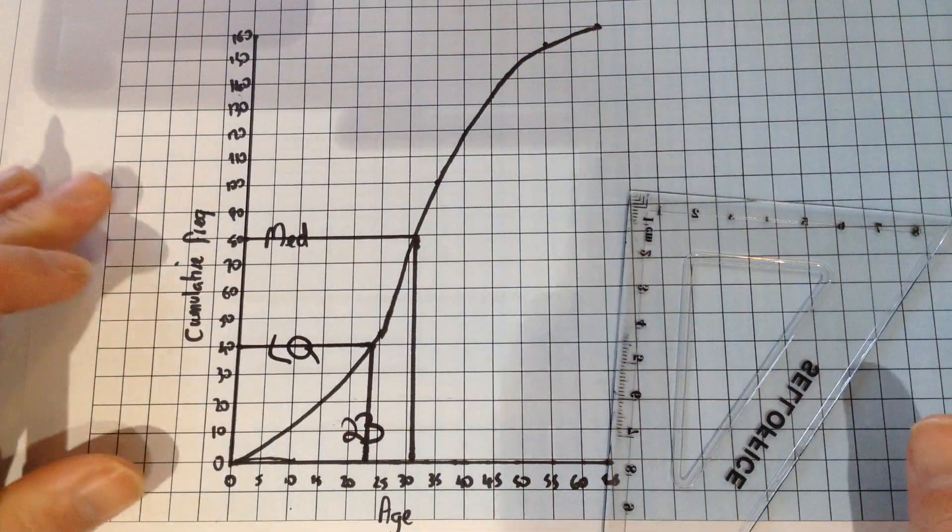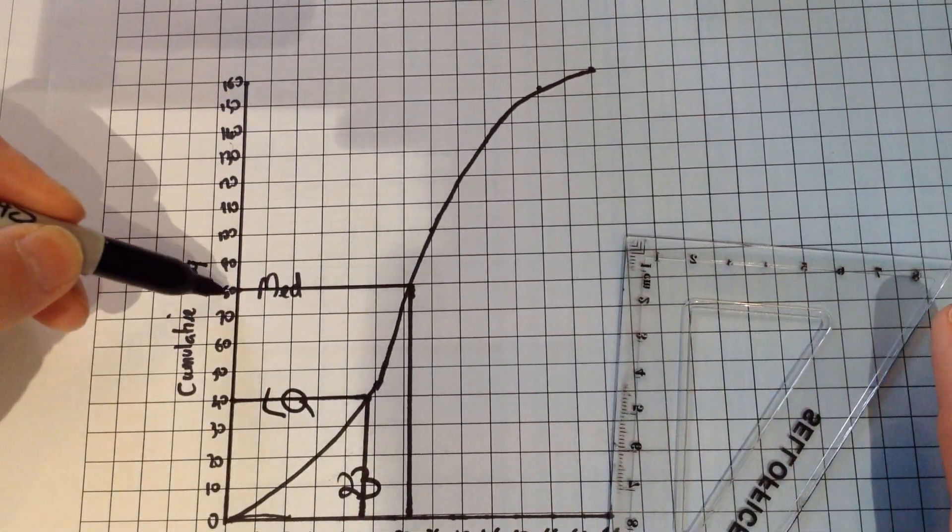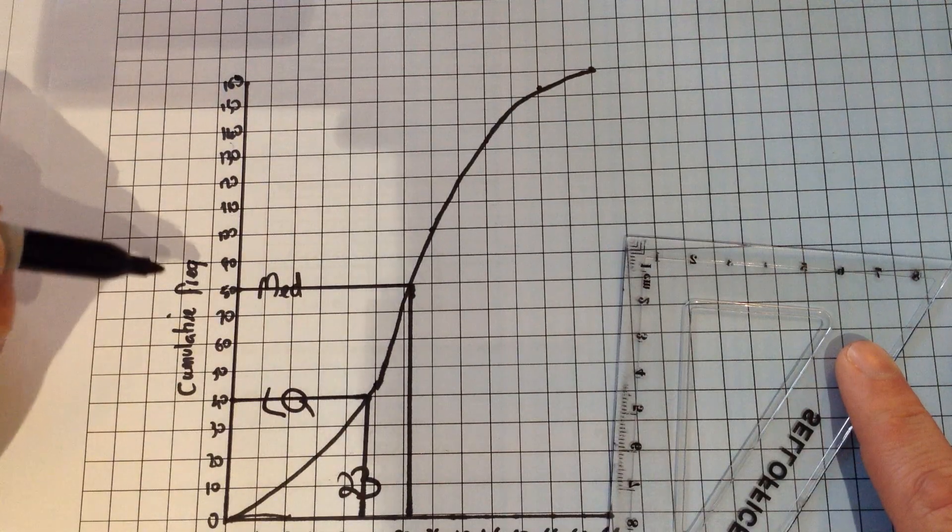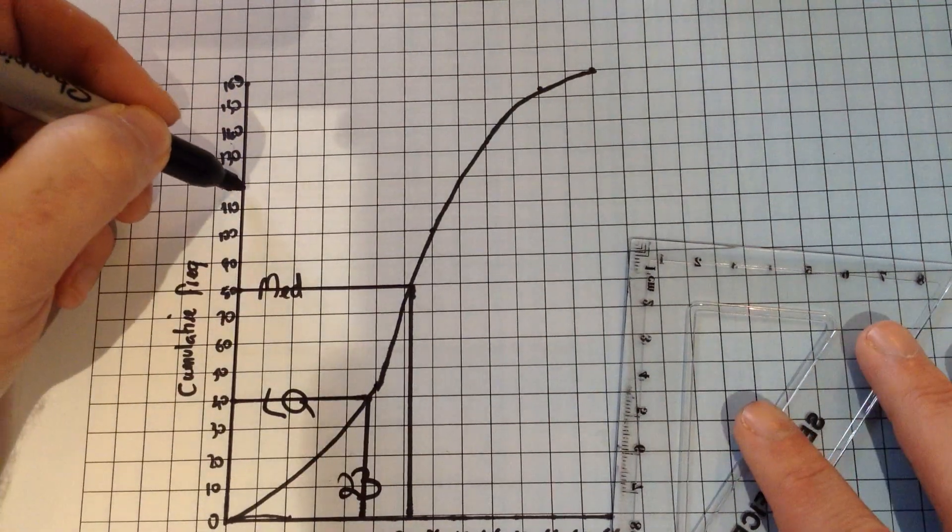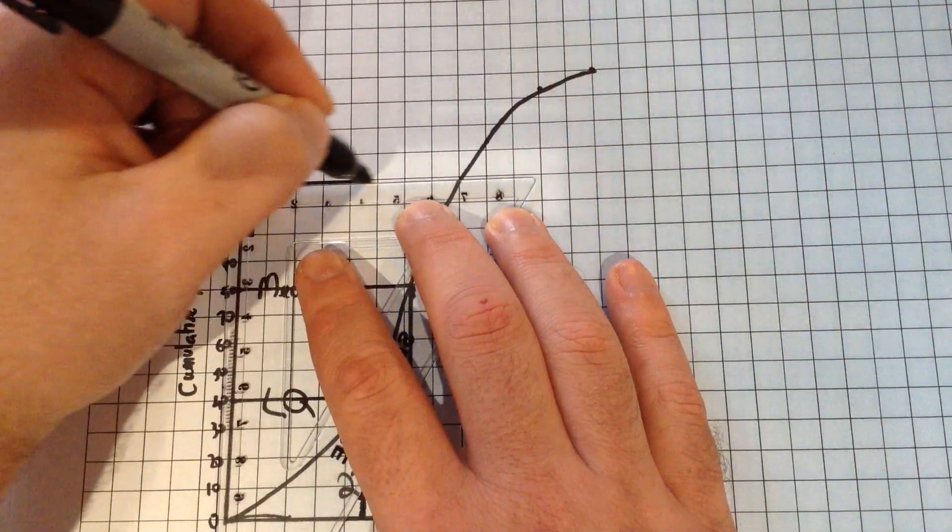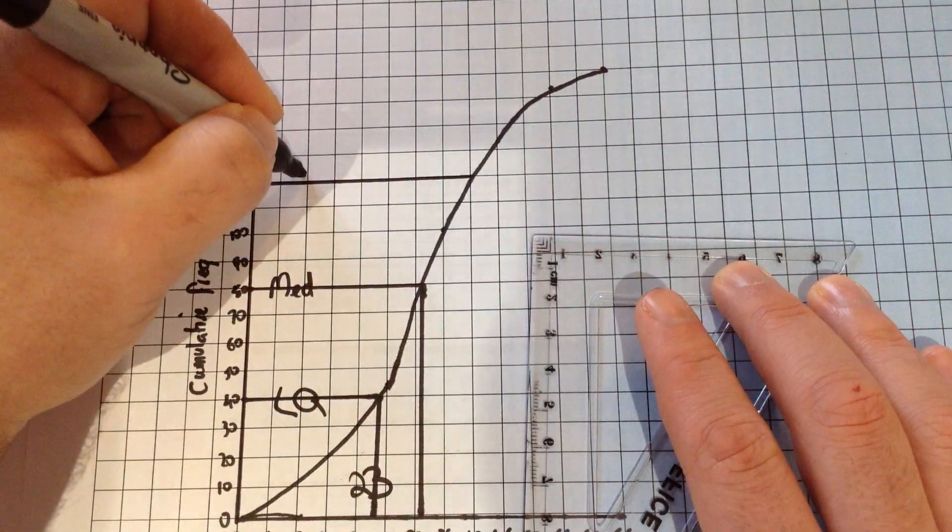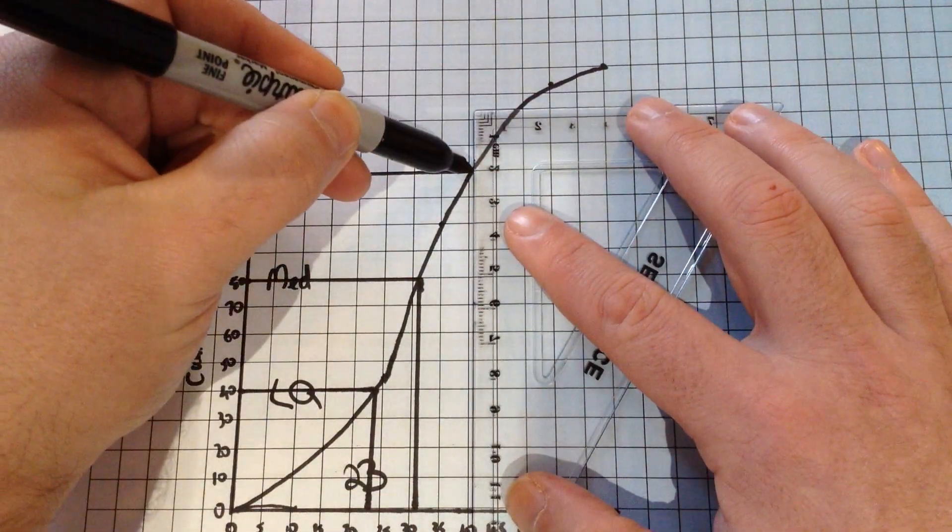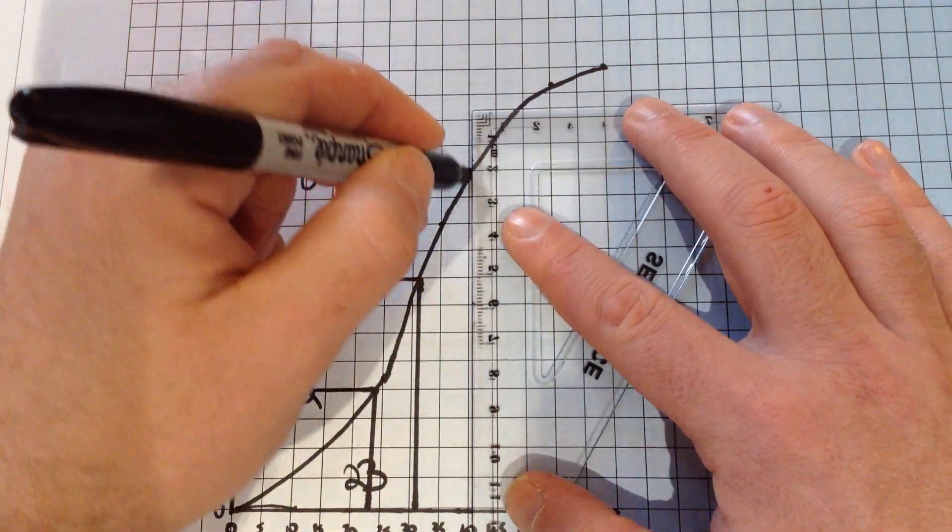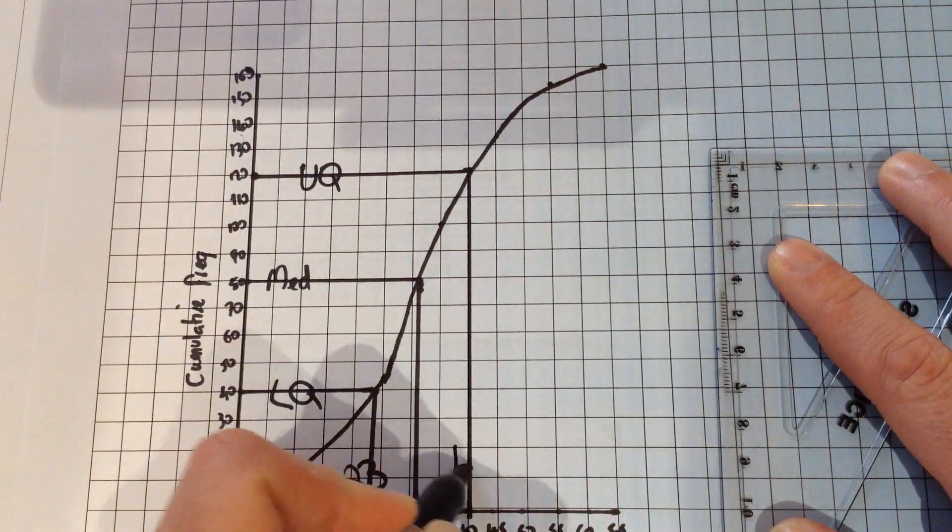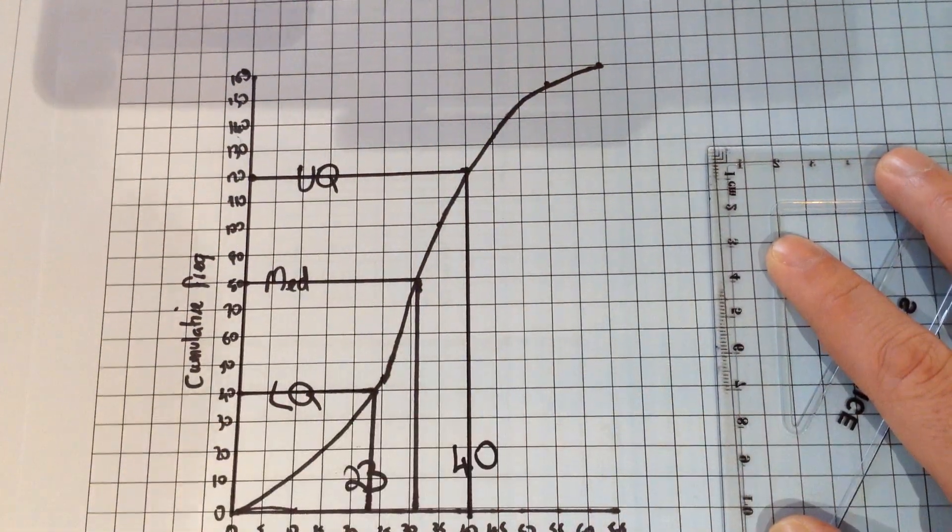The upper quartile will be halfway between the median and that 160, the biggest value. So halfway between those two is 120. So I draw myself a line again at 120 using a ruler. So here's my upper quartile. Wherever that hits your curve, draw a line going straight down. I believe with mine we get an upper quartile of 40.